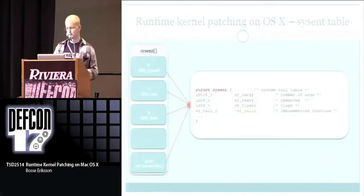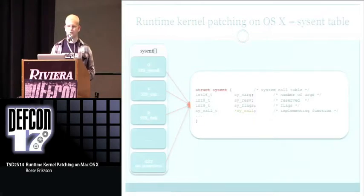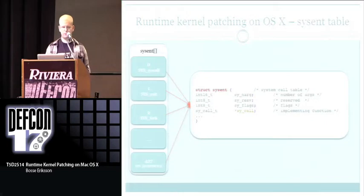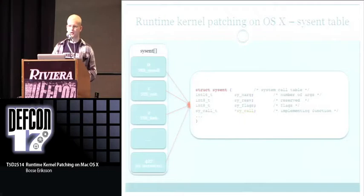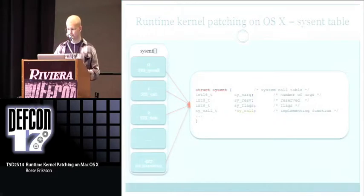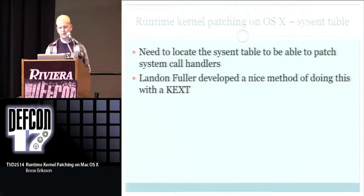OS X has a global sysentry array which holds a structure for each system call available in the kernel. Its maximum is 427, going from zero up. Each entry has a structure containing the system call arguments and a pointer to the system call handler — the function that gets executed when the system call is called. That pointer is our main target when we patch.